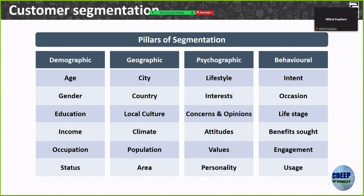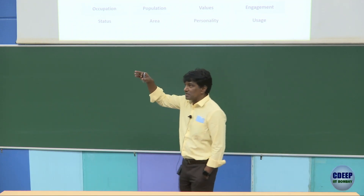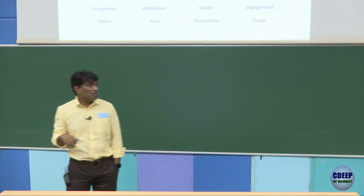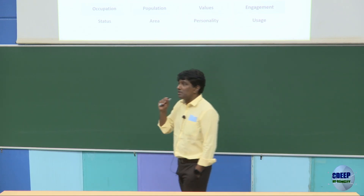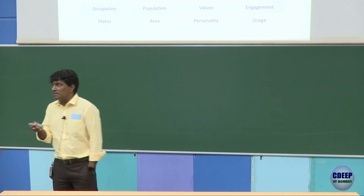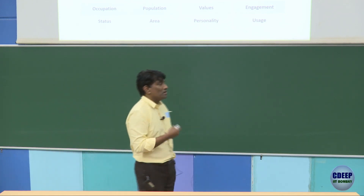The pillars of segmentation: demographic is obvious — age, gender, education, income, tangible. Geographic is also obvious and tangible — city, urban/rural, country, local culture, climate. But the psychographic and behavioral are the hidden aspects of customers you really have to find out. I was speaking with someone trying to automate a signaling process and I was telling him the customer may not be convinced with the benefits offered because they are so minuscule — it may not be worth their time and money. Unless you do customer discovery, you will not find this out.